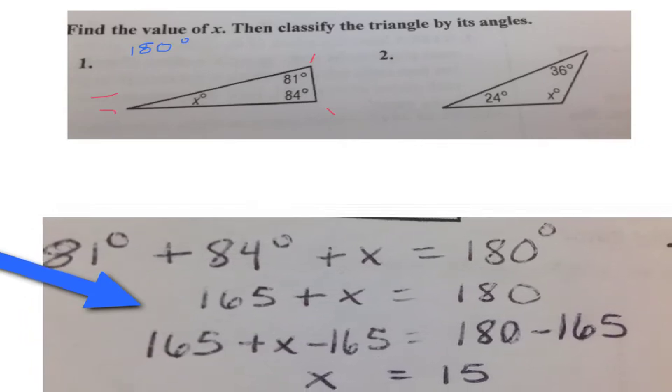The next step, then, would be to take 81 and 84, add them together, to get 165 plus x equals 180. We want to get the x all by itself. So, in this case, we're going to subtract 165 from both sides.